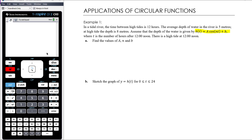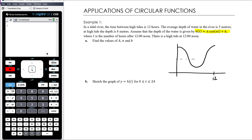Thinking about this general form — a·cos(nt) + b — it's a cosine graph, possibly dilated, with a potential period change from n, and a vertical translation b, but no horizontal translation. The time between high tides is 12 hours, which tells us the period is 12. The average depth of 5 meters tells us where the central value is — the graph has been translated up by 5.